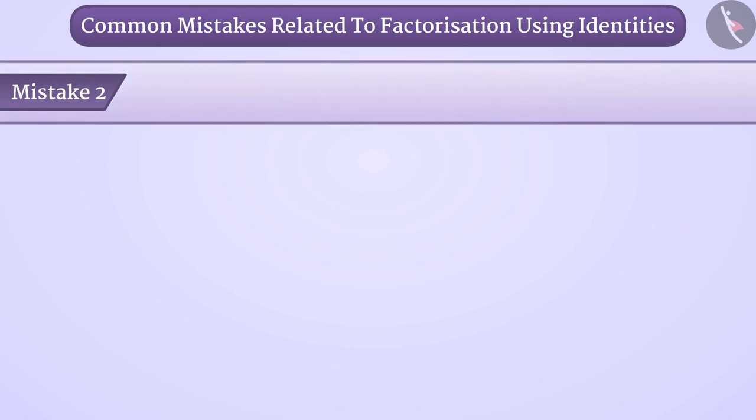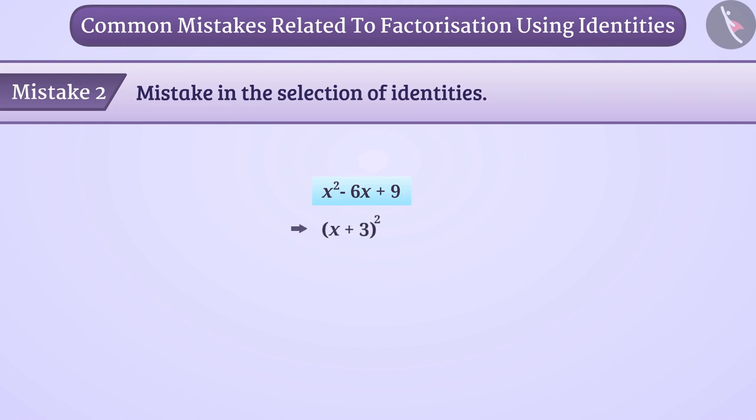Mistake 2: Mistake in the selection of identities. If some children are asked to factorize algebraic expression x square minus 6x plus 9, they answer x plus 3 whole square in hurry. But it is a wrong answer.